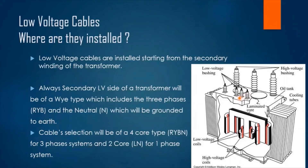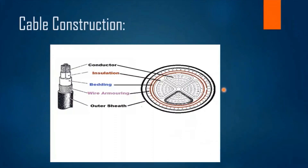We can also use two-core cables — one line and the neutral — to connect a one-phase system. Now, what are the layers of a cable? We have five layers: conductor, insulation, bedding, armoring, and outer sheath. We also have a top view of the cable showing how these layers are constructed together.